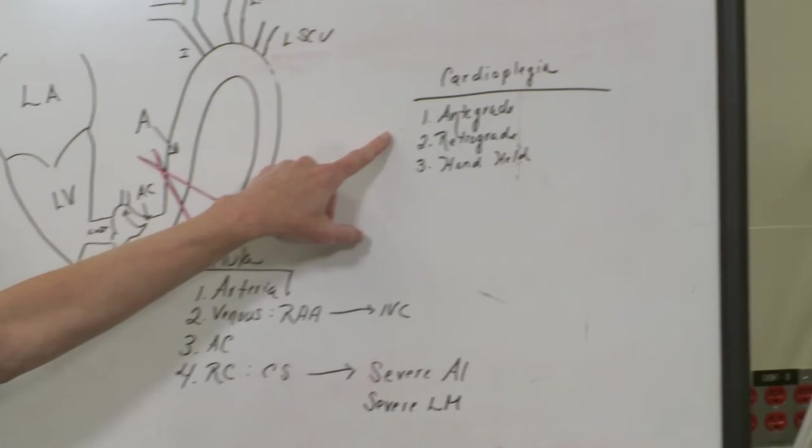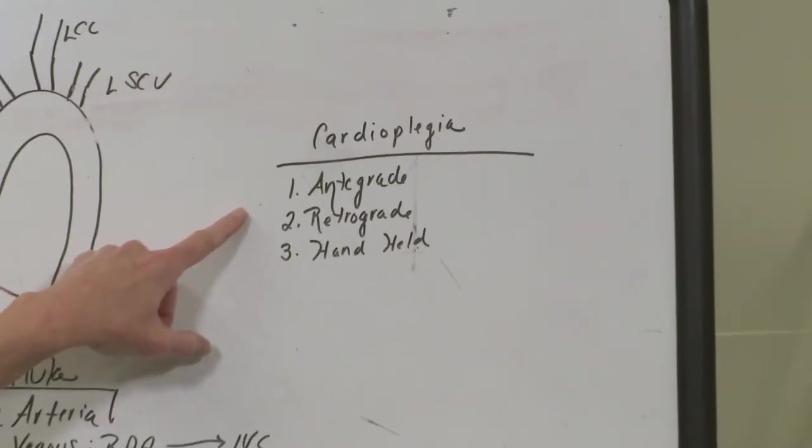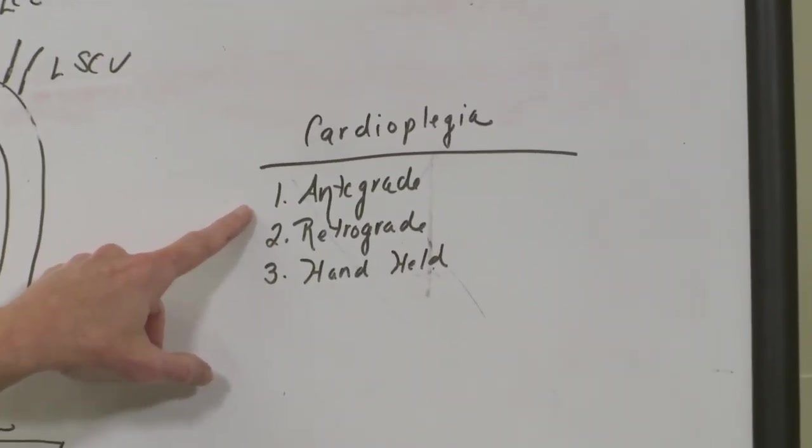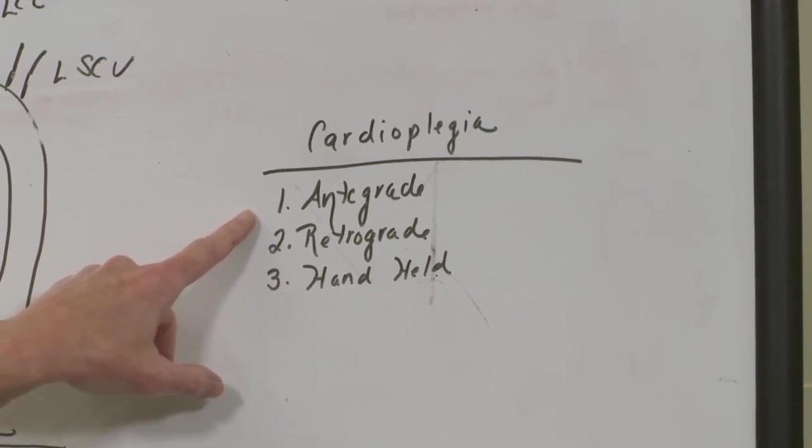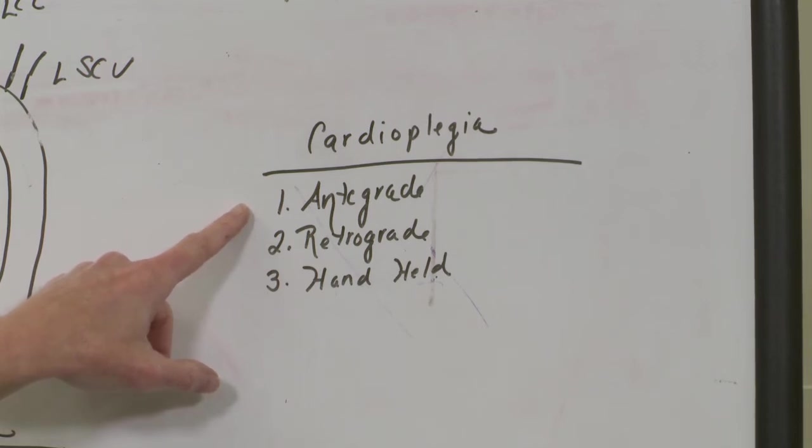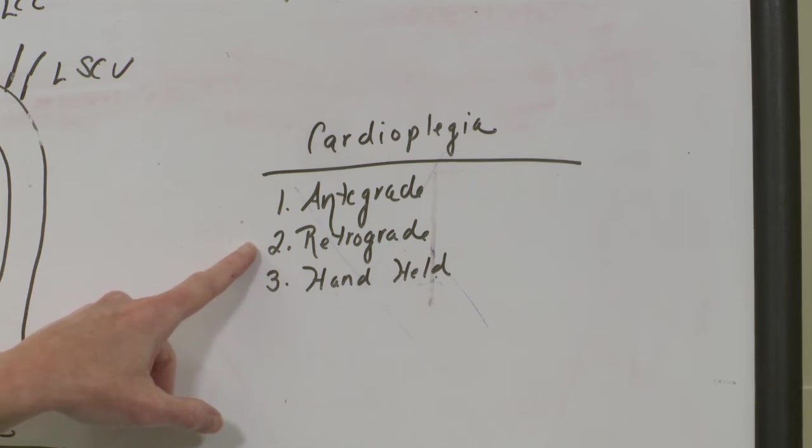And real briefly, I just want to go over the different types of cardioplegia, the way that you can give it. One, you can give it antegrade, which means it goes down the coronary arteries. The reason that we do that is to stop the heart so we can protect it and preserve it while we're on bypass. The second way we can give cardioplegia is retrograde, which is in the coronary sinus. That's giving your cardioplegia through the venous drainage system of the coronary anatomy, coronary arteries, excuse me.